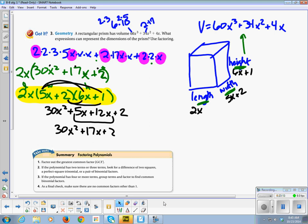And our summary for factoring polynomials. When your book says take note, we are going to take note. Factor out the greatest common factor. If the polynomial has two terms or three terms, look for the difference of two squares, a perfect square trinomial, or a pair of binomial factors. We did all that yesterday. If the polynomial has four or more terms, group terms and factor to find the common binomial factors. As a final check, make sure there are no common factors other than one.